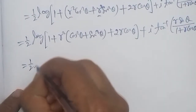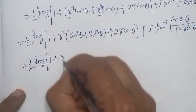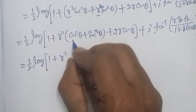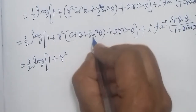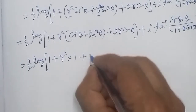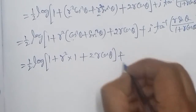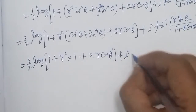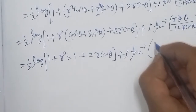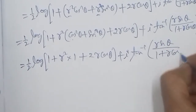We factor out r² from the squared trig terms. Using the identity sin²θ + cos²θ = 1, the expression r²·cos²θ + r²·sin²θ simplifies to r². So the bracket becomes 1 + 2r·cosθ + r², and the imaginary term remains i·tan⁻¹(r·sinθ / (1 + r·cosθ)).